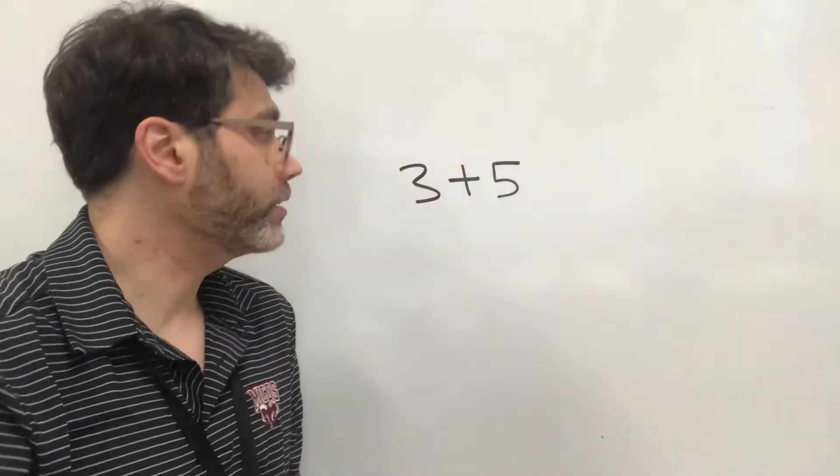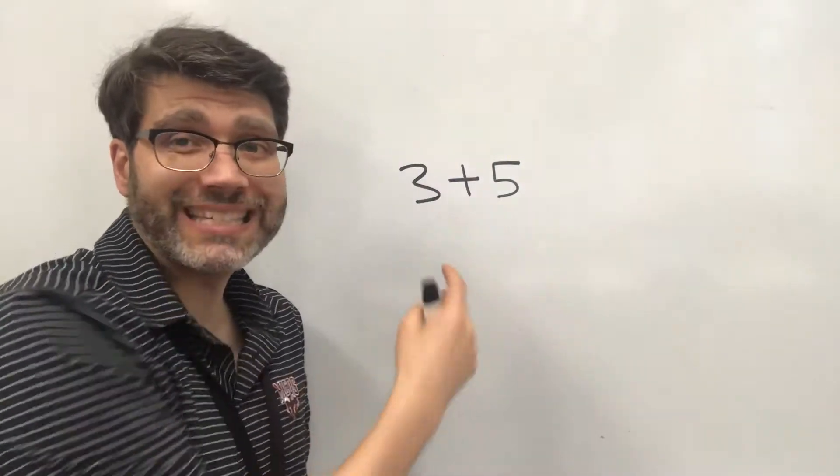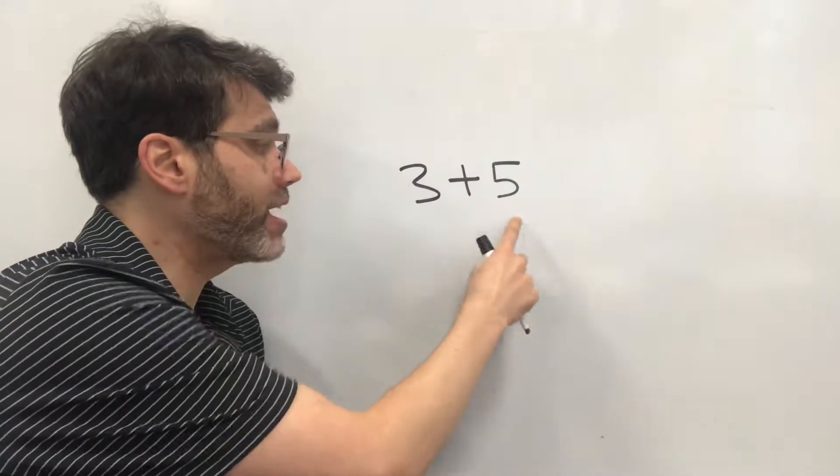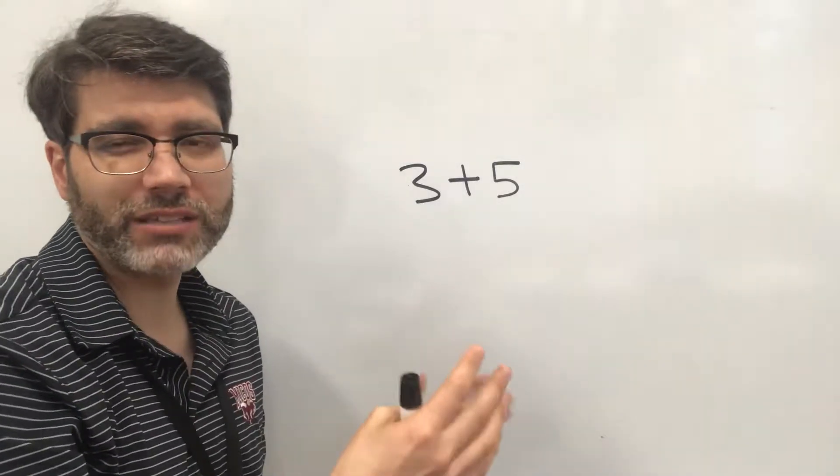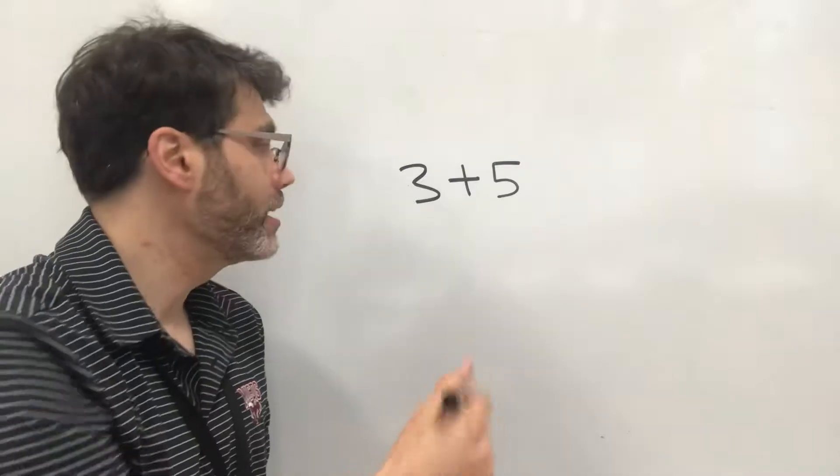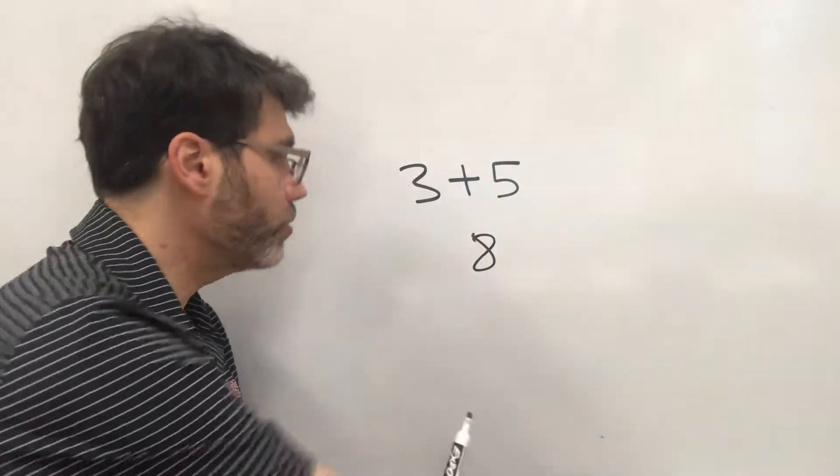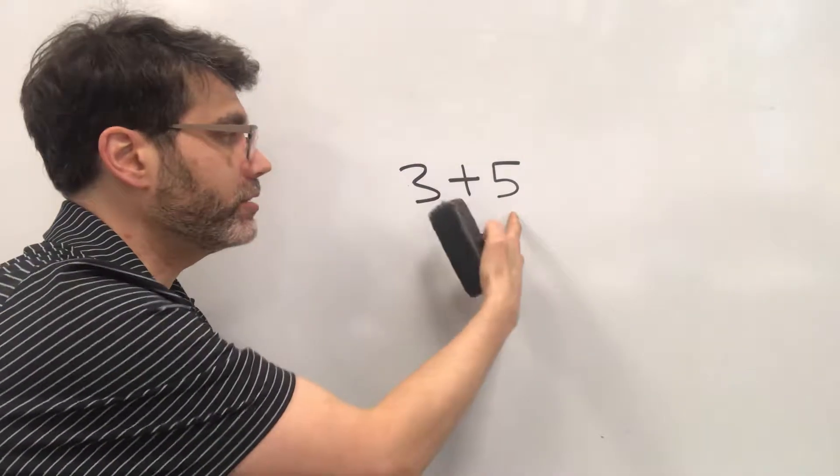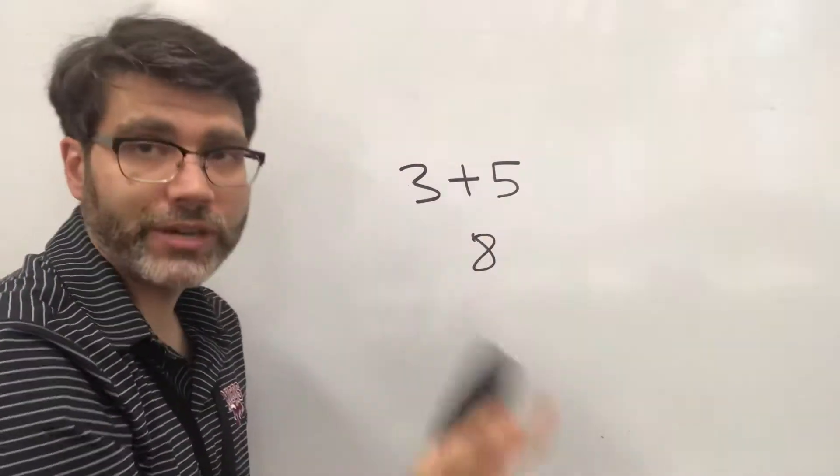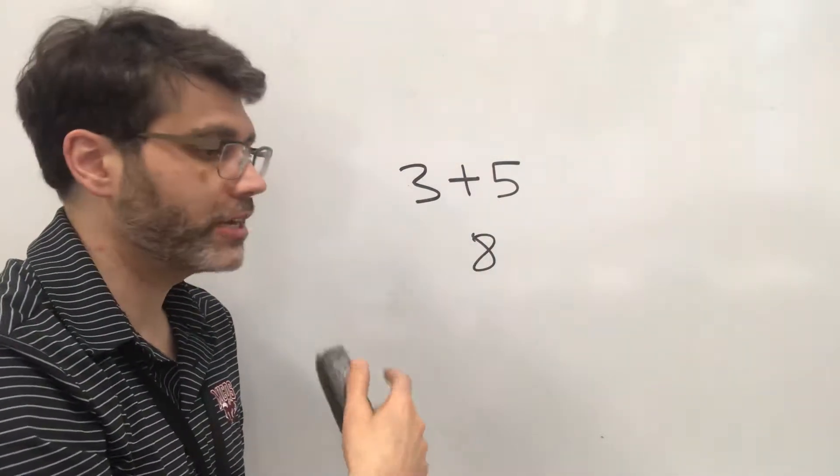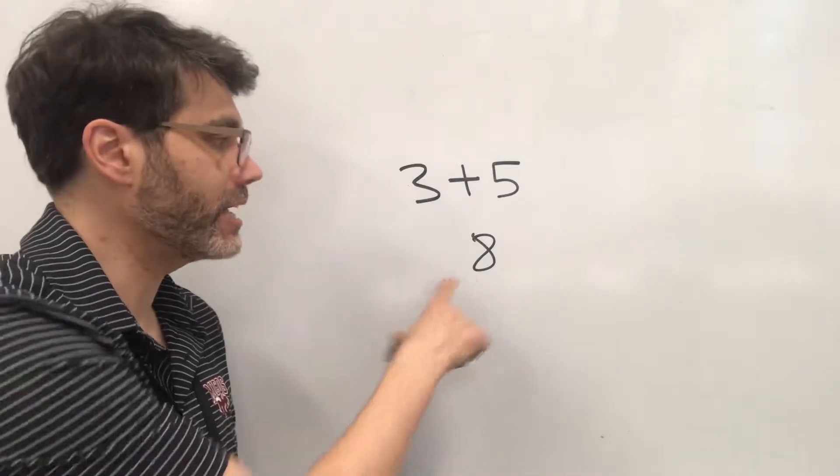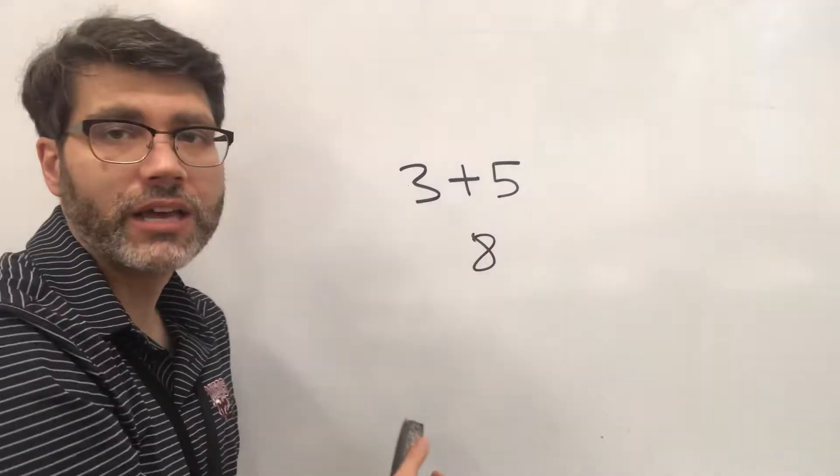Now when we are given an expression we can simplify it. So 3 plus 5 can be boiled down. So simplifying is like boiling down to just the essence of what it is and so this simplifies to 8. Okay, so if we have numbers then we can do operations to them like addition, subtraction, multiplication, division to get to one simplified number.